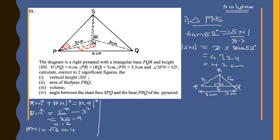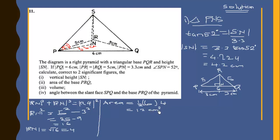Now that RN is 4, the area of the triangular base equals half times base times height, which is half times 6 times 4. This gives 3 times 4, which is 12 centimeters squared.